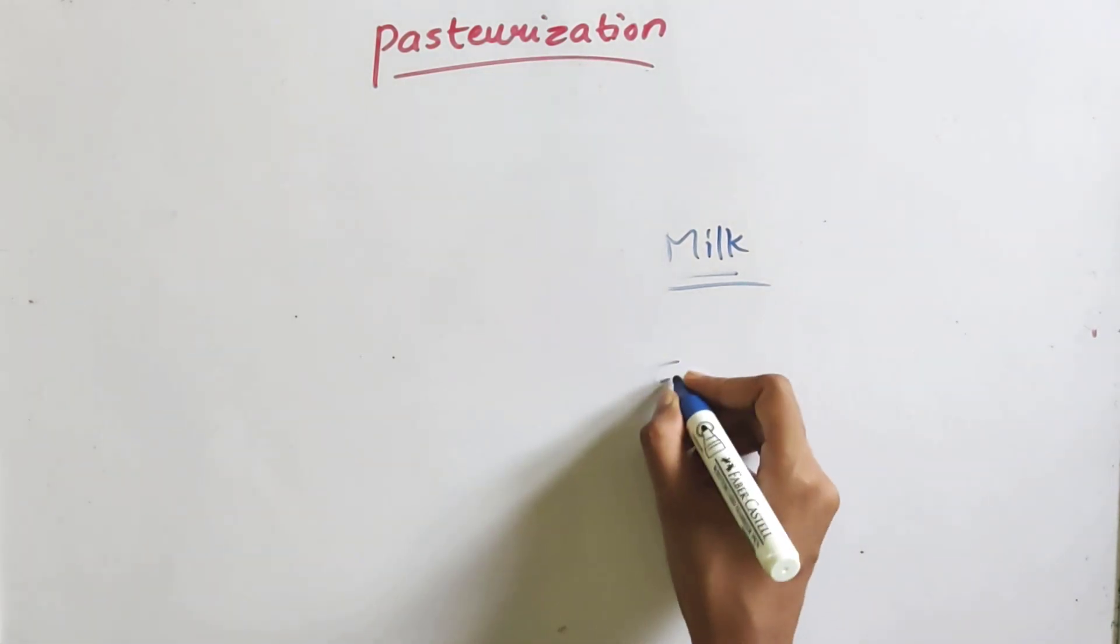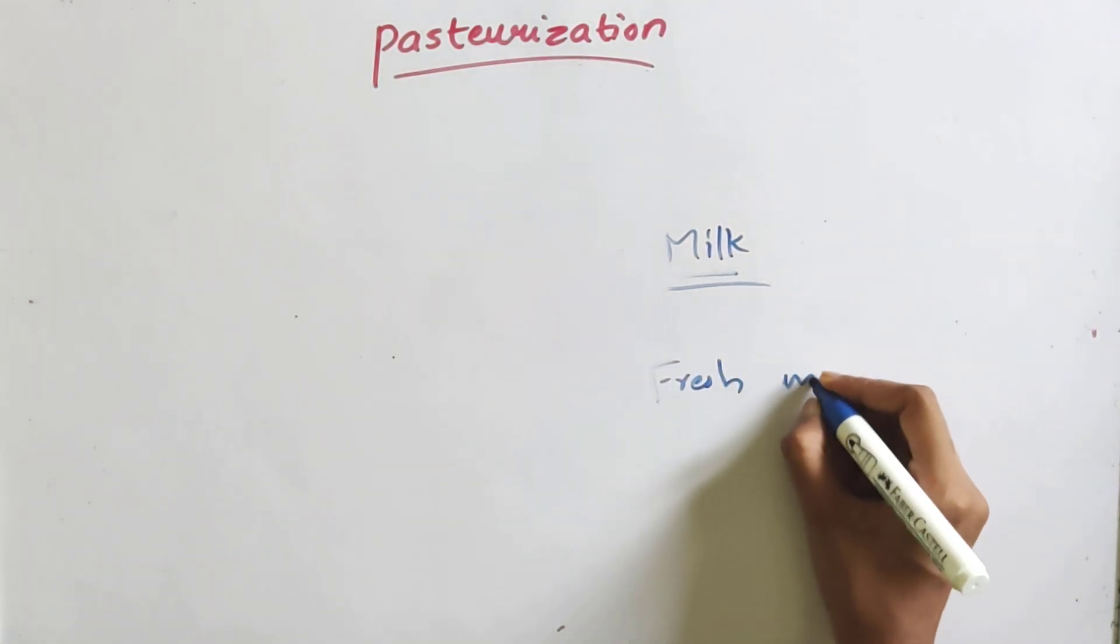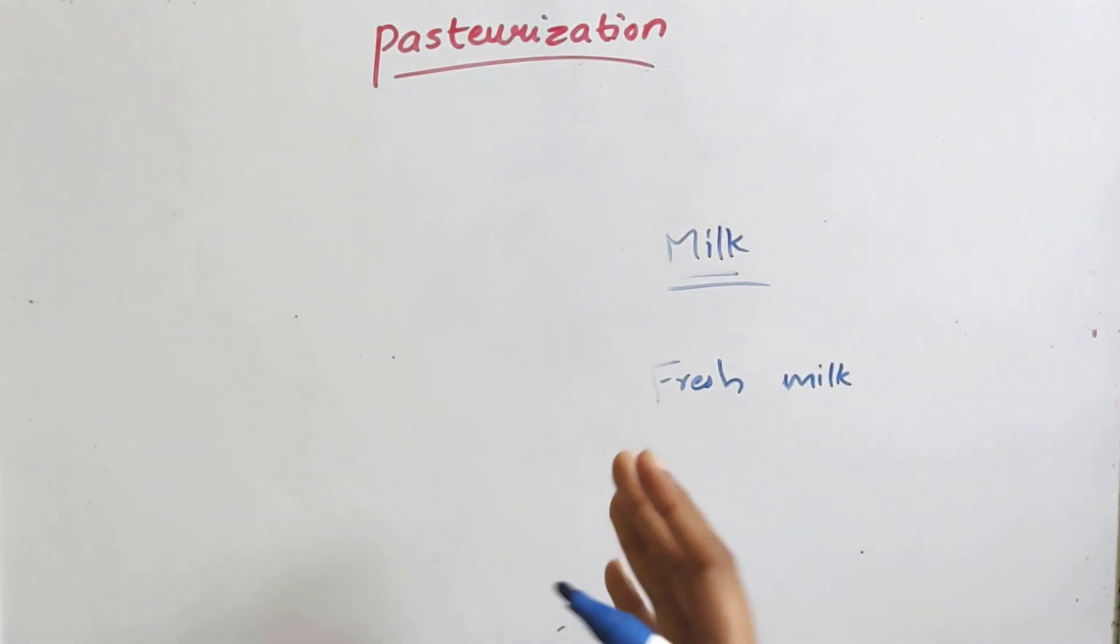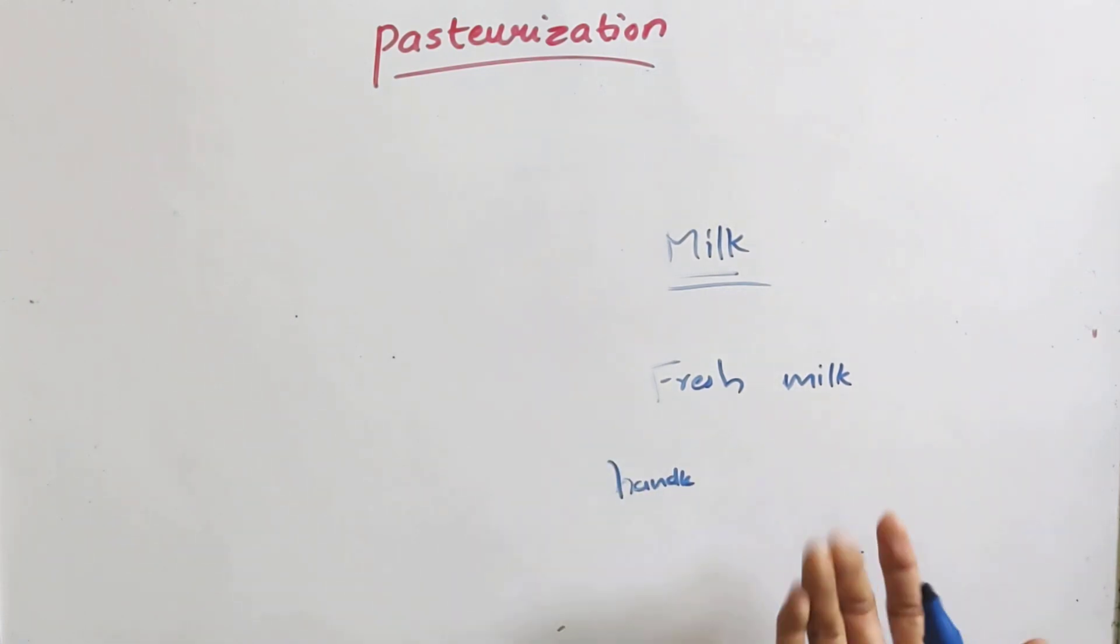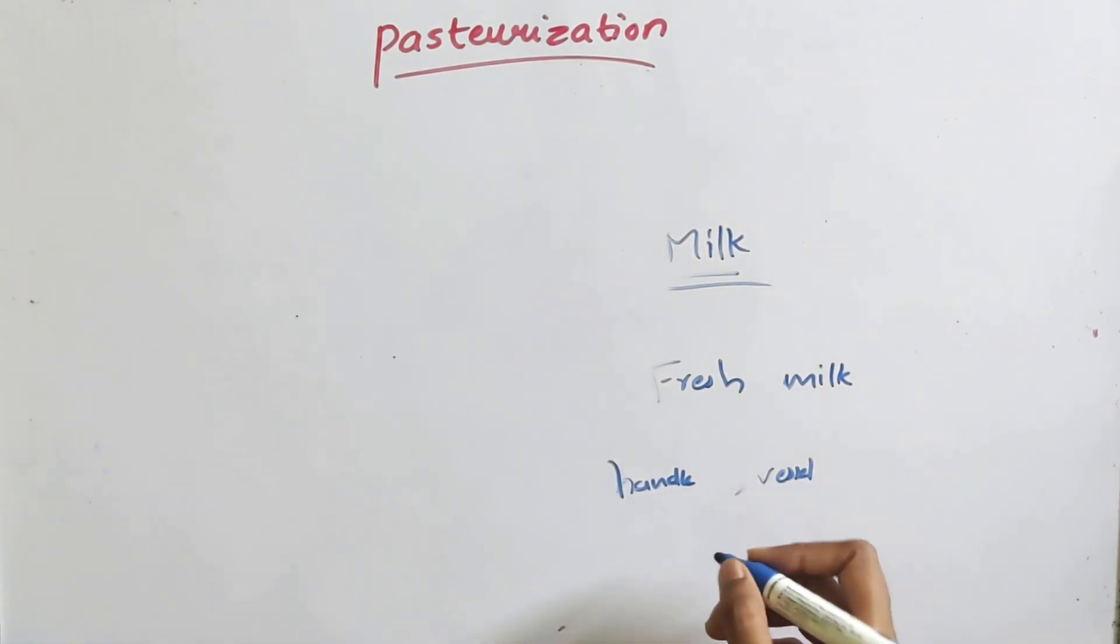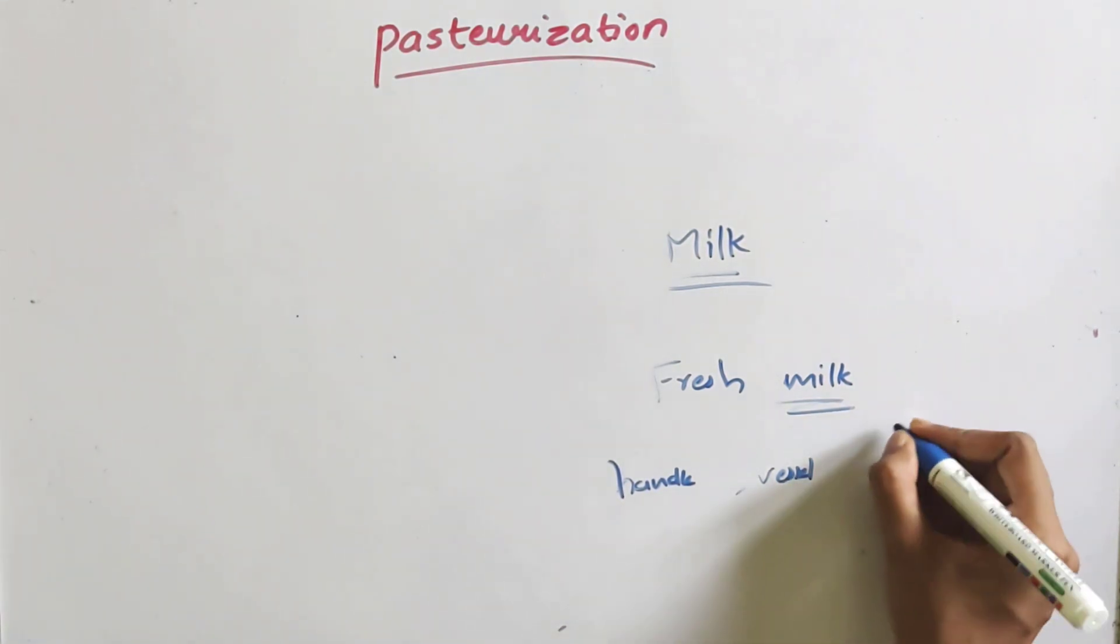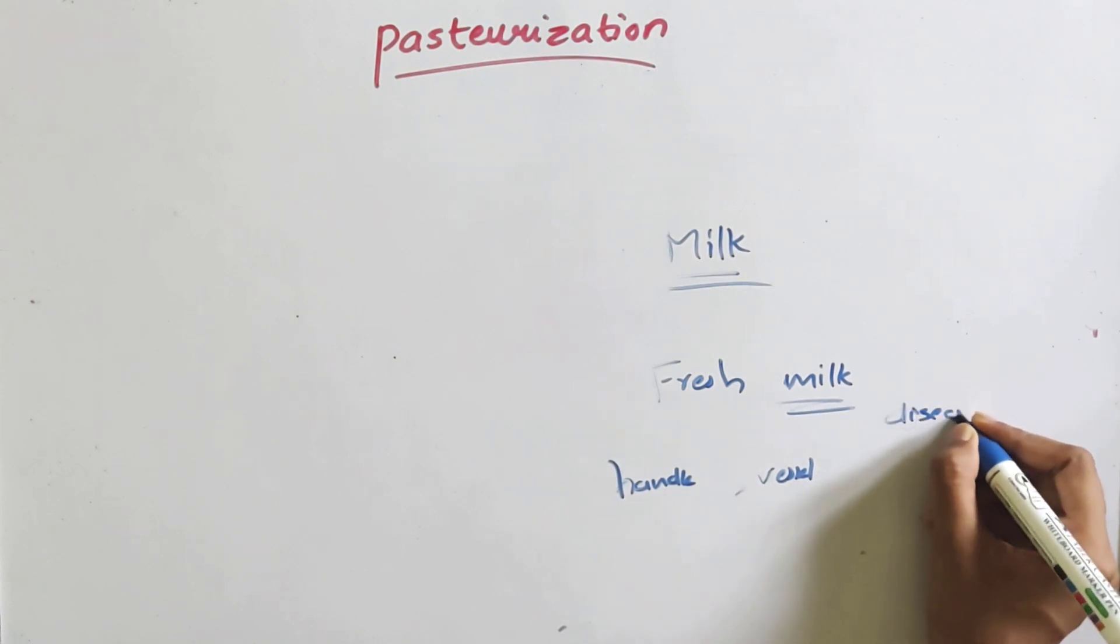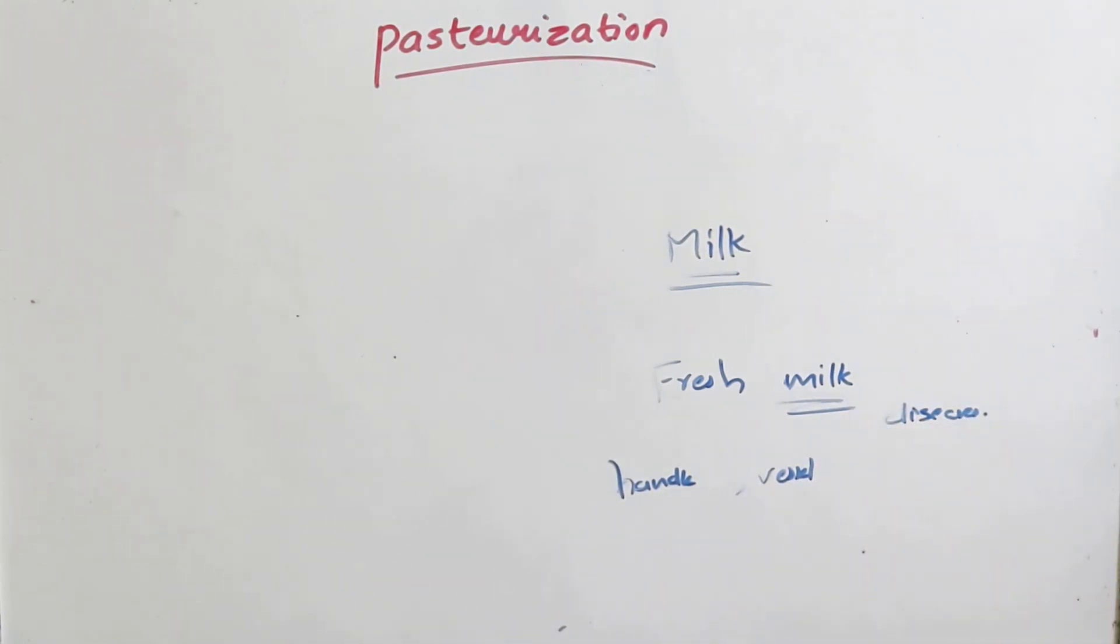The fresh milk has a certain microbe count. If pathogens are present, you will have a chance to get pathogenesis and disease. If you get the pathogenesis, you will have a disease. We need to destroy the pathogens through pasteurization.